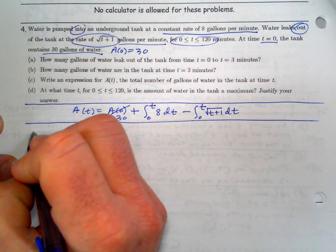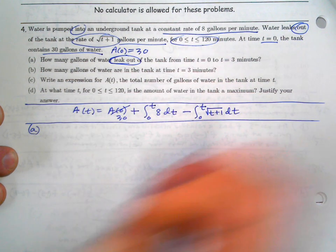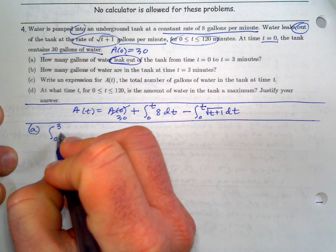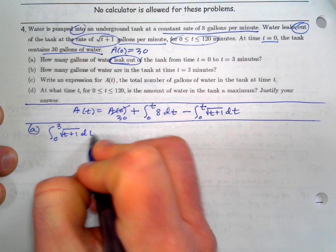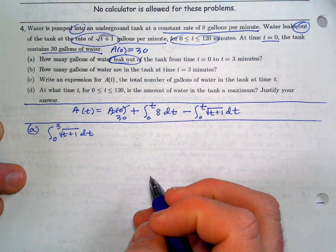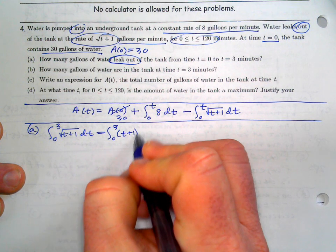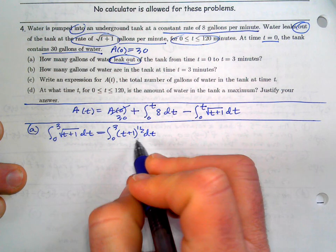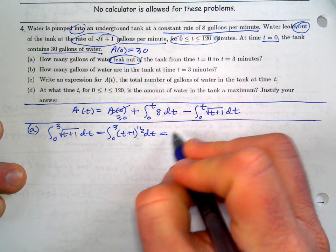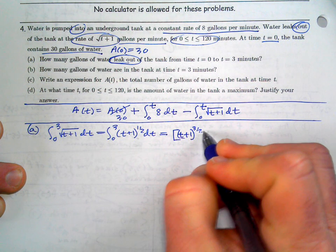Part a asks how many gallons leaked out from t=0 to t=3. That's the integral from 0 to 3 of √(t+1) dt — make sure you write that setup down. Since we don't have a calculator, we work this out by hand. This is (t+1)^(1/2), a power rule with an inner function whose derivative is 1, so no extra steps needed. The antiderivative is (t+1)^(3/2) divided by 3/2.